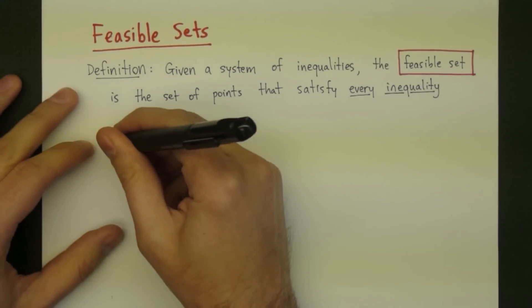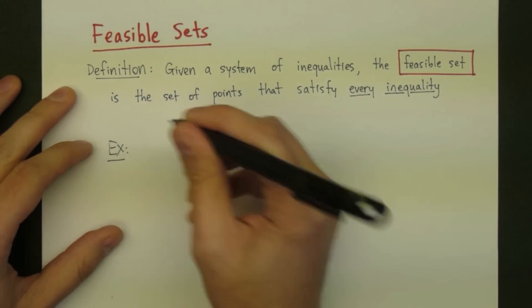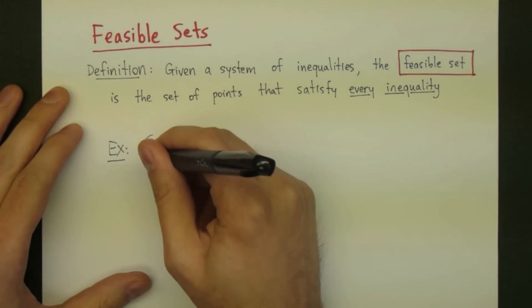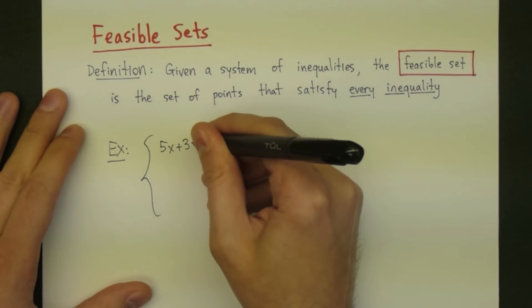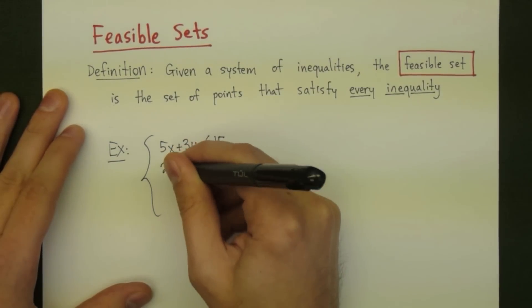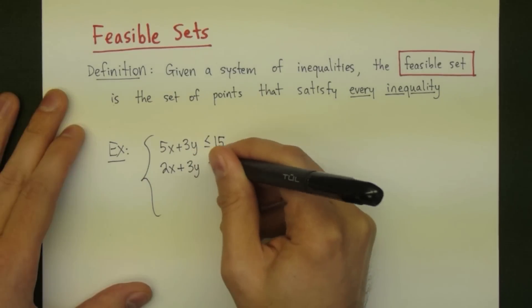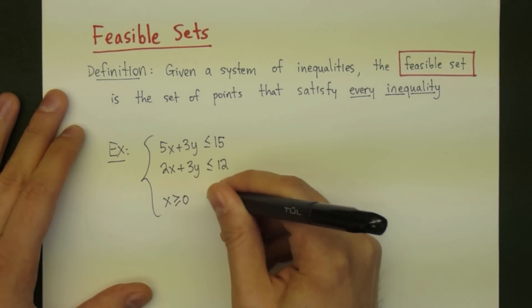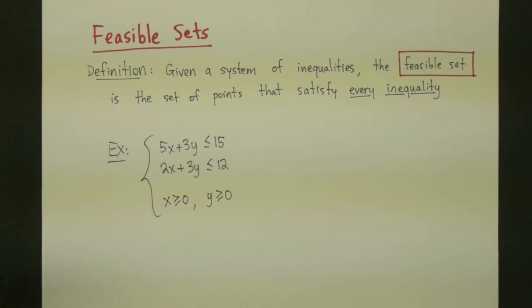Let's take a look at an example. Consider the system: 5x plus 3y is less than or equal to 15, 2x plus 3y is less than or equal to 12, x is greater than or equal to 0, and y is greater than or equal to 0.